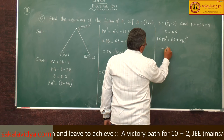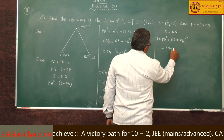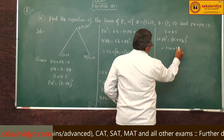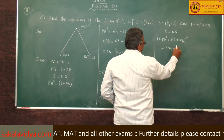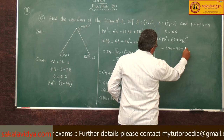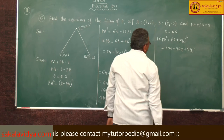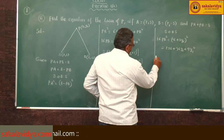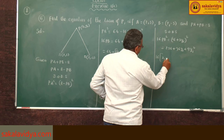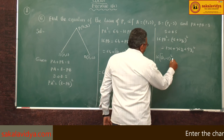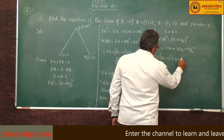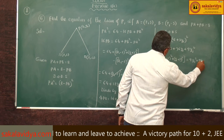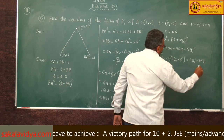Expanding the right side: (16 + 3·y1)² equals 256 plus 96·y1 plus 9·y1². Substituting PB² = (x1 - 2)² + (y1 + 3)², the left side becomes 16·[(x1-2)² + (y1+3)²].